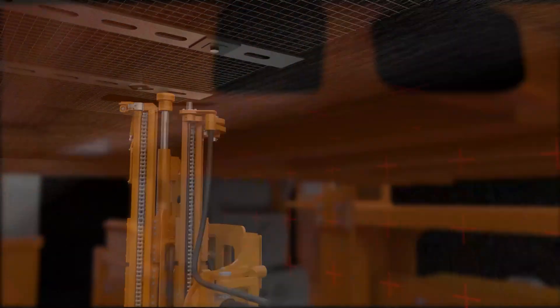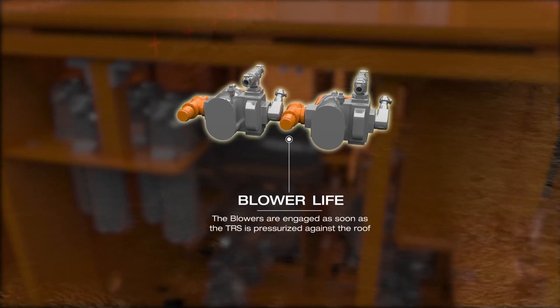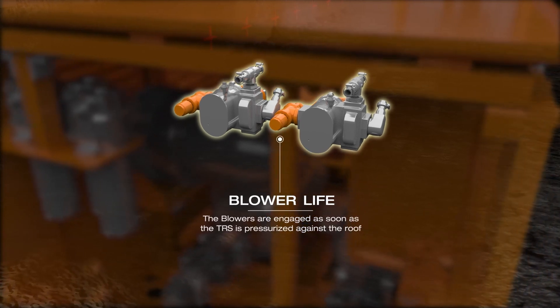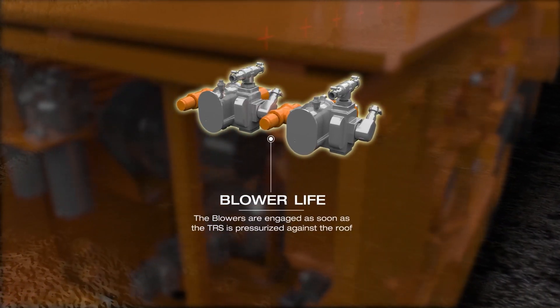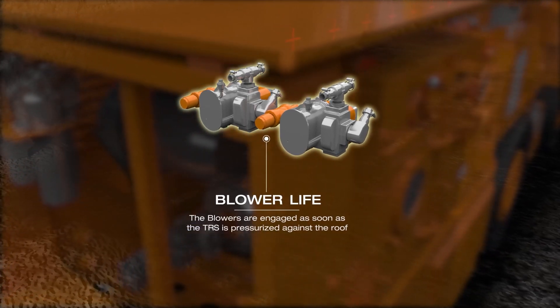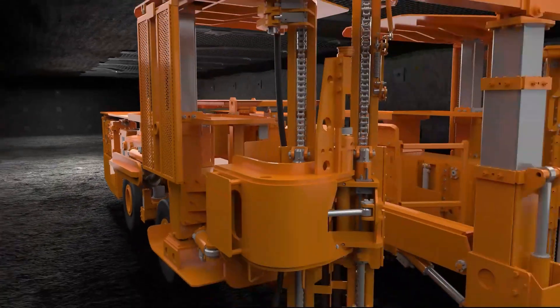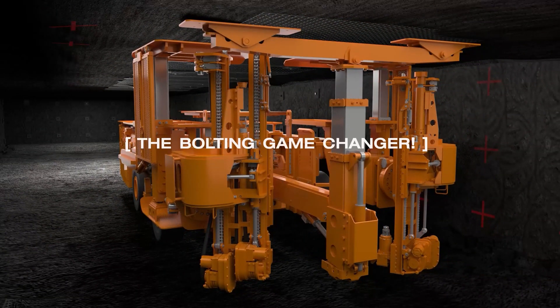Blower life: Traditionally on an HDDR, if fitted with hydraulic-driven blowers, the blowers are engaged as soon as the TRS is pressurized against the roof. They remain engaged until the TRS is lowered after a complete row of roof and rib bolts. With the dual-mast design, the blowers are only engaged when the mast drill is in drill mode, which reduces blower run time. The Fletcher dual-mast boom is indeed the bolting game-changer.